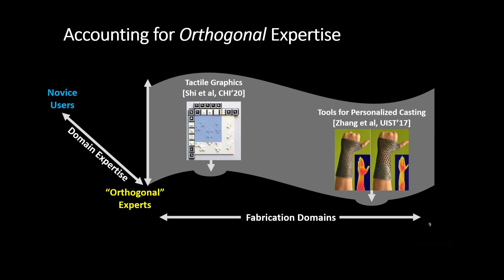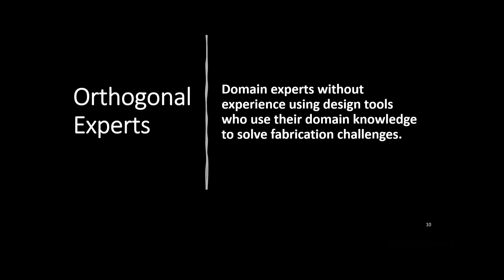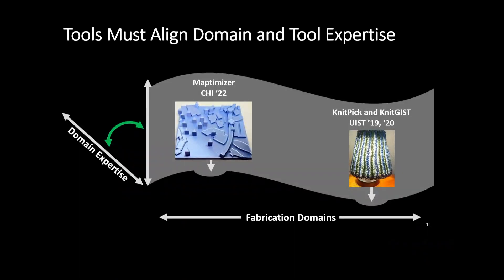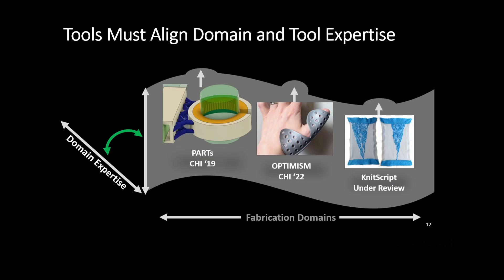I add a third dimension: domain expertise. Novice users have no relevant expertise for the problems they're trying to solve. But we also have orthogonal experts — domain experts without experience in these complex tools who bring domain knowledge to solve fabrication challenges. By reframing them as orthogonal experts, we can build design tools that align domain expertise with tool complexity, lowering the floor for tactile graphics and machine knitting while raising the ceiling for 3D printing medical devices.